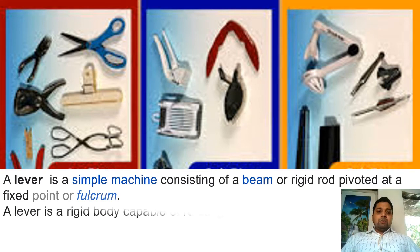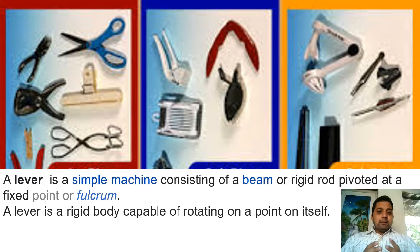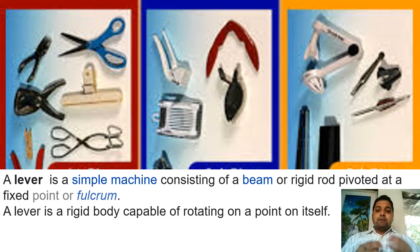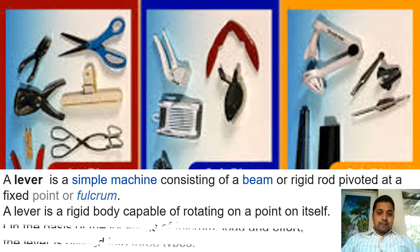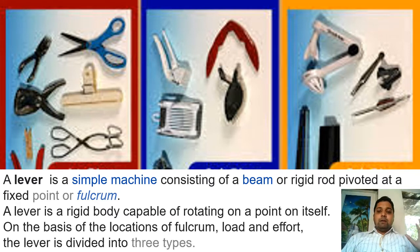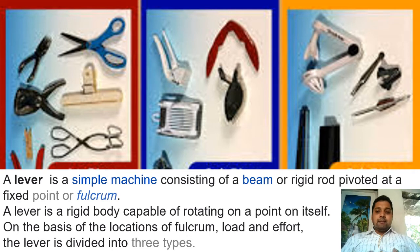A lever is a rigid body capable of rotating about a point — the fulcrum. From that fixed point, you can rotate to both sides, producing a moment of force. Based on the effort (force applied), the load (object on which force acts), and the position of the fulcrum, levers are divided into three categories or types.